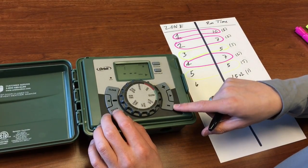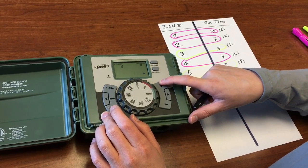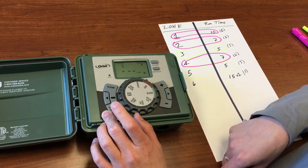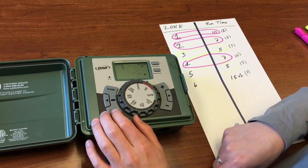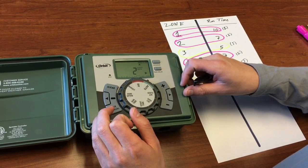What we need to do is head over to program B. Remember we're on program B. Here we have station 1, we're going to skip that. Same with station 2. Now station 3 is the one we have running for 5 minutes. Station 4 we're skipping and station 5 we're also going to have run for 5 minutes. And station 6 we're skipping.